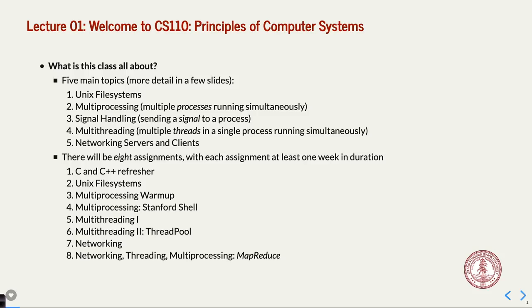There are basically five main things. The first thing we're going to cover is Unix file systems. You know a little bit about files and you've used Unix if you've logged into Myth from CS107. But we're going to talk about how the actual file system itself is built — what it means to be a file system, how you keep track of where the various bytes are in a file, and how you look up file names.